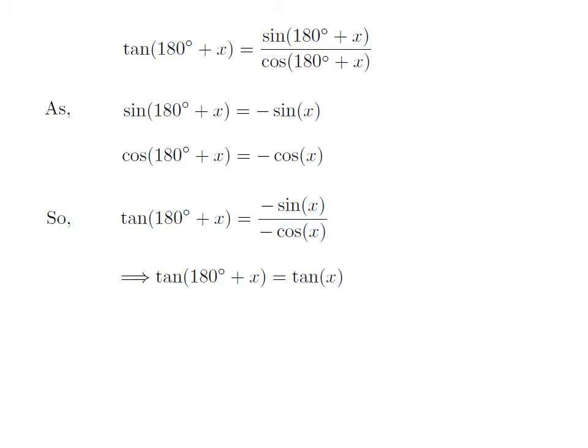So tangent of 180 degrees plus x is equal to sine of x divided by cosine of x, which is equal to tangent of x. Therefore, tangent of 180 degrees plus x is equal to tangent of x.